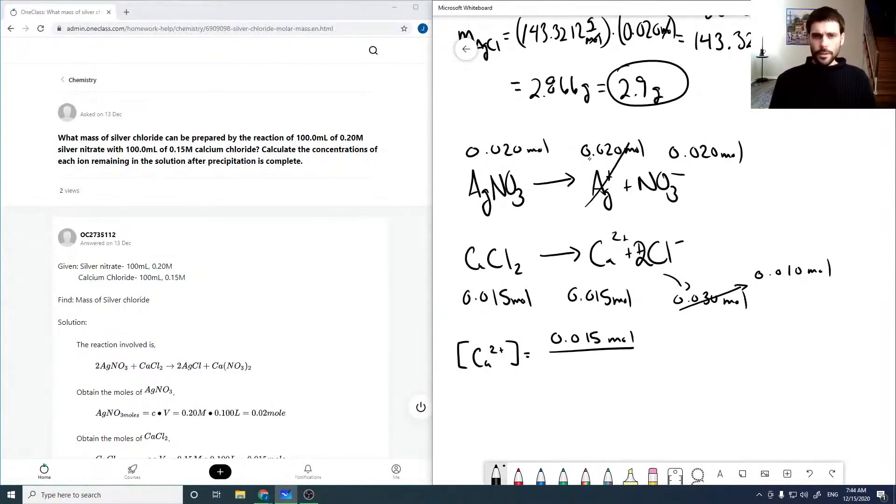In, so our total volume is now 200 mL because we've added 100 mL to 100 mL. And then we're going to multiply this by 1,000 mL per liter to put it into moles per liter. And if we run this through on our calculator, we'll get 0.075 molar.